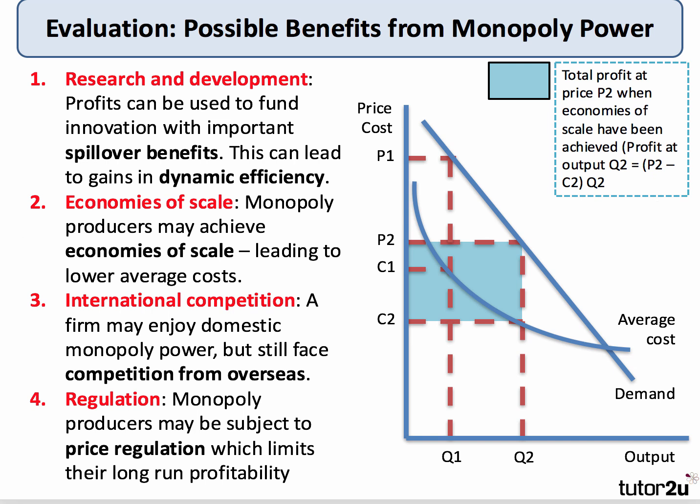What are some of the benefits of monopoly? First, research and development: monopolies tend to make more profit, and those profits can fund research and innovation which could have important spillover benefits — positive externalities — for example, the big pharmaceutical companies fast-forwarding new medicines and new relief for patients. We would say monopoly profits could lead to gains in dynamic efficiency. Second, monopoly producers are better placed to achieve big economies of scale, and if those economies of scale are exploited, that brings down average cost of production, which might get passed on to the consumer as a lower price.